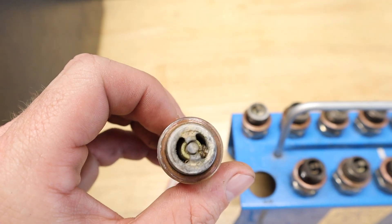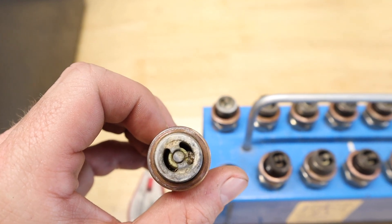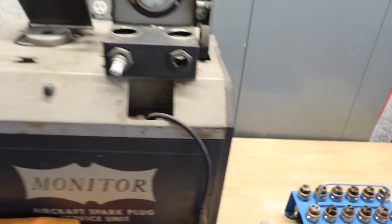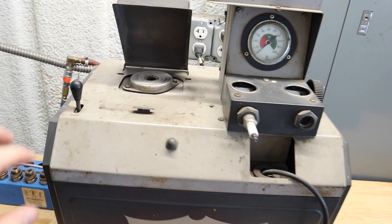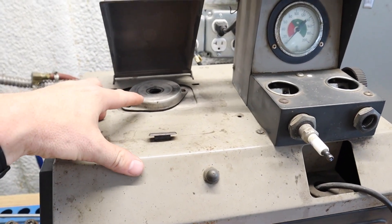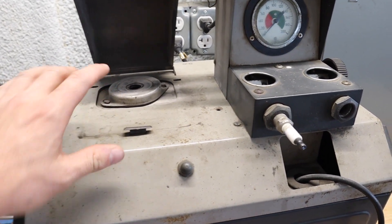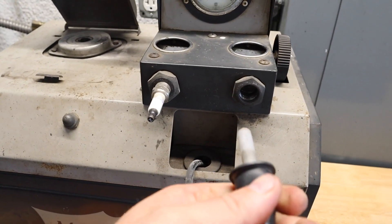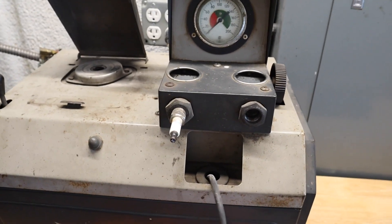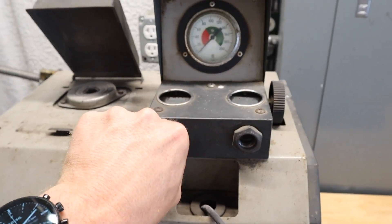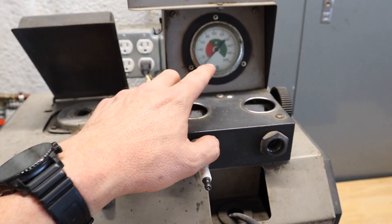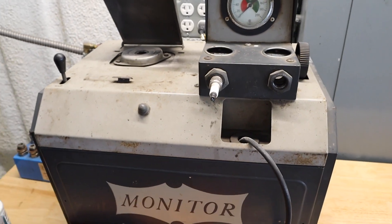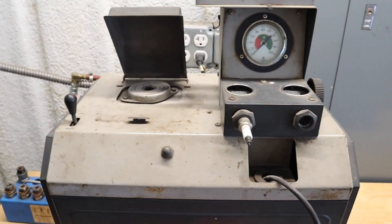There's actually some lead deposits down inside there. What you want to do first is use a pick and pick that stuff out. Then we're going to stick it in this little cleaner. It blasts it with some special media and cleans that spark plug up. Then we're going to test it. Spark plugs sometimes will fire fine without pressure, but if you test it at about 80 psi, the spark will be completely different. I'll show you guys that process real quick.